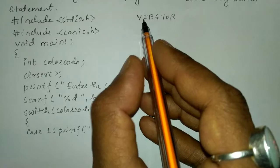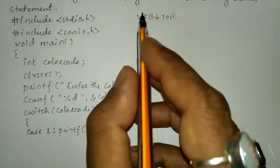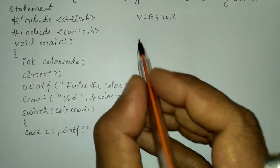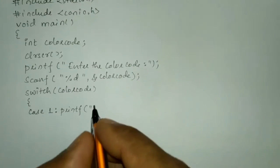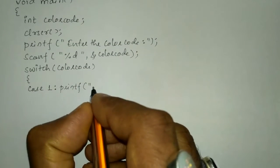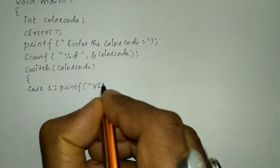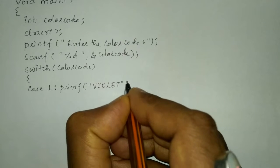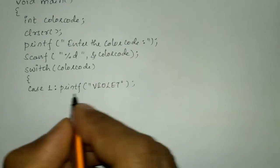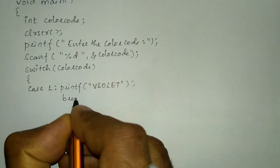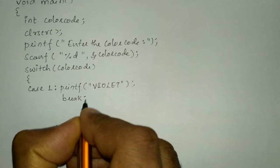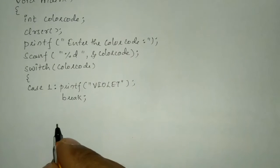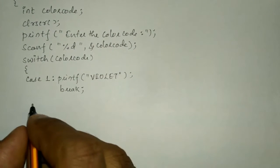First, when the user presses one, it should display the color as violet. So I'm going to write printf with 'violet' in double quotation marks, then put a semicolon. For every case label there must be a keyword called break; otherwise all the case labels will get executed.